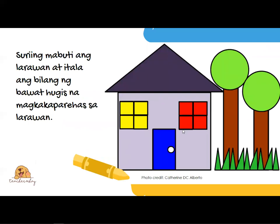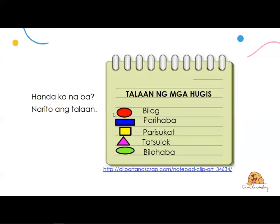Surihing mabuti yung larawan at itala ang bilang ng bawat hugis na magkakapareha sa larawan. Pwede nyong i-pause yung video na ito. Kung may paper or notebook kayo and a pencil, you can jot down notes — pwede nyong isulat yung mabibilang nyo. Tapos, checkan natin mamaya ha. Kay Teacher May, meron akong gamit na talaan ng mga hugis. Nag-drawing ako ng mga shapes: bilog, rectangle o parihaba, parisukat or square, tatsulok or triangle, at bilohaba or oval. Handa ka na ba? Ito yung talaan ko — pwede mong kopyahin yan. Let's start.